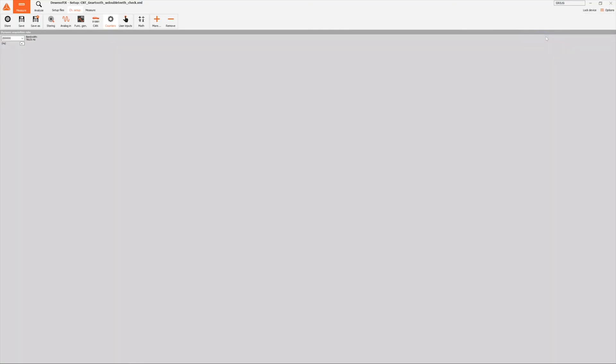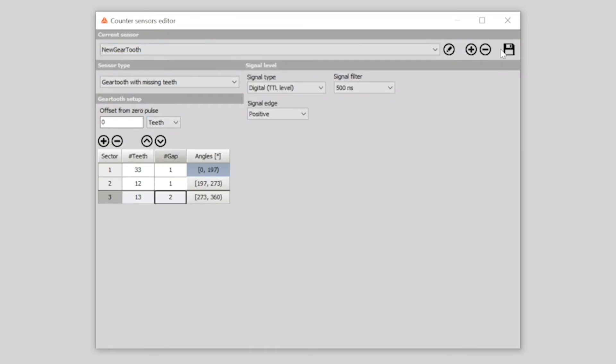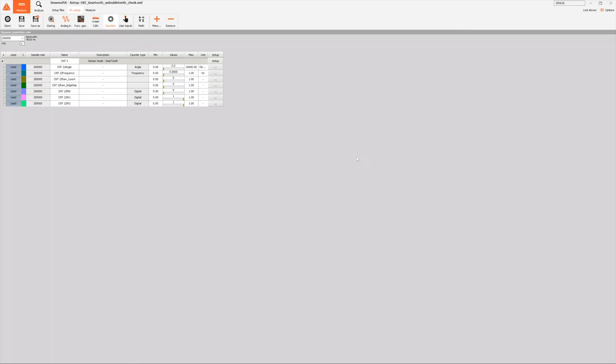To add a gear-tooth we open the editor, select the type of sensor and set the gear-tooth ratio. After these easy steps, we use the newly added sensor in our measurement.